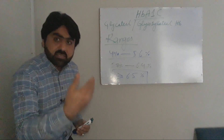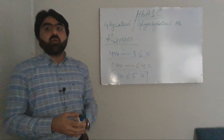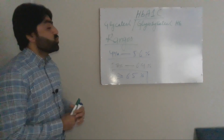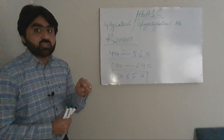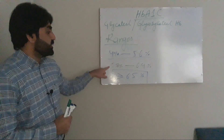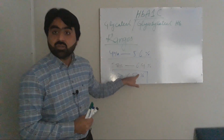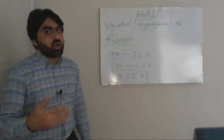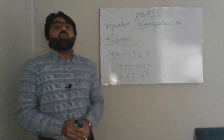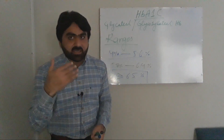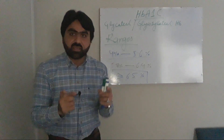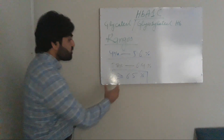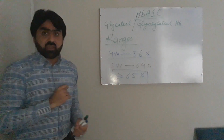The American Diabetes Association provides a guideline for the interpretation of HbA1c ranges. They say that if your value of HbA1c is between 4% to 5.6%, then it means you are not diabetic. If the value of your HbA1c falls between 5.6% to 6.4%, then it means that you are pre-diabetic, which means that you are at risk of getting diabetes in the near future.